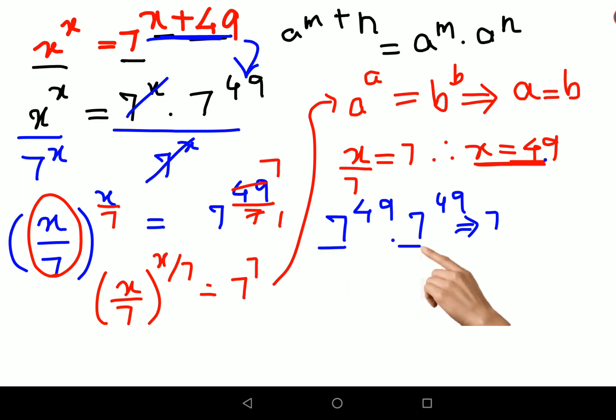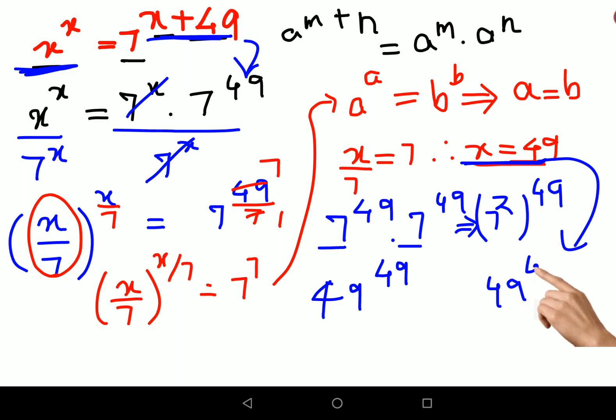The bases are the same, so you can add the indices. So we will have 7 squared the whole raised to 49. This then comes out to be 7 squared is 49 raised to 49. And that is your LHS because LHS is x raised to x, and x value is 49 raised to 49.